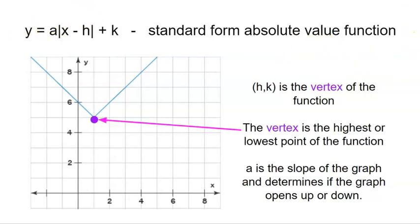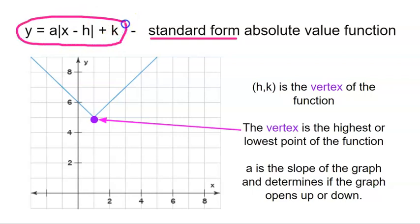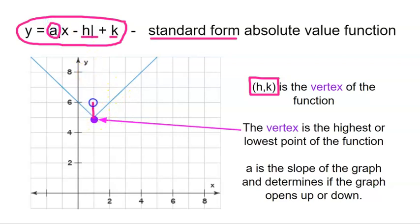In the Desmos exploration that you completed, you should have explored absolute value functions and how they shift and move. We talked about the standard form of an absolute value function: y equals A times the absolute value of X minus H, plus K. H and K is the vertex of the function — that highest or lowest point. A determines the slope of the graph, how much we rise over run each time on our steps.